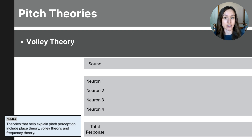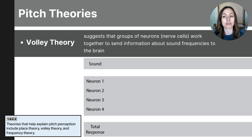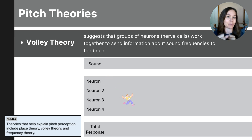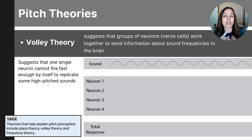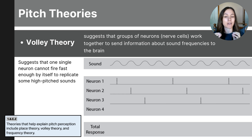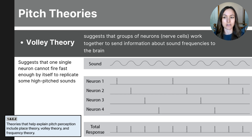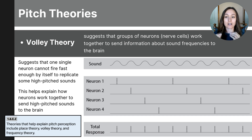The next pitch theory is the volley theory. The volley theory suggests that groups of neurons work together to send information about sound frequencies to the brain, like a relay race where several neurons take turns passing the sound information. A single neuron can't send signals fast enough for high-pitched sounds, so multiple neurons take turns firing, creating a combined signal. As shown in the diagram on screen, a rapid wave representing a high-pitched sound is replicated by four neurons alternating their firing so they can send the signal fast enough. This team effort allows the brain to interpret higher pitches that a single neuron alone could not handle. In summary, groups of neurons work together to send higher-frequency sound information.